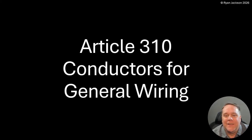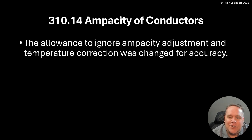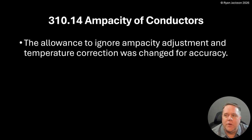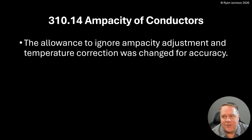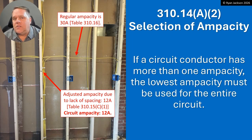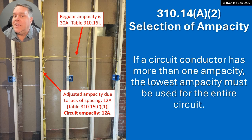310.14 is kind of the baseline rule in Article 310. Let's take a look at what Panel 6 did — I actually think they fixed a problem that even I never caught. I spent a lot of time in 310.14 and this rule never dawned on me. Article 310: Conductors for General Wiring. 310.14: Ampacity of Conductors. The allowance to ignore ampacity adjustment and temperature correction was changed for accuracy. We're going to be talking about 310.14(A)(2).